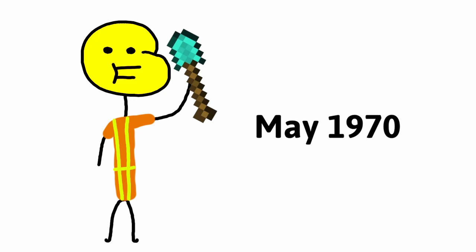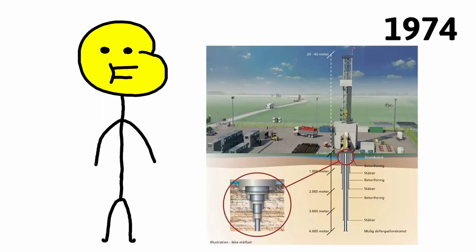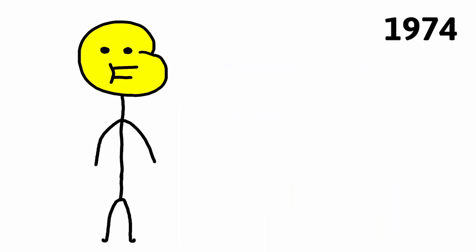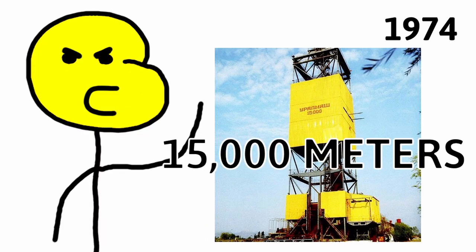The drilling began in May 1970 with the Uralmash 4E, which is used to drill oil holes. Four years later, they reached so deep that they needed to make a new machine that could dig even deeper. So they made the Uralmash 15,000, named after the new goal: 15,000 meters.